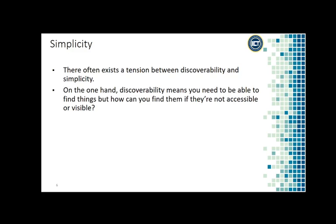The tension is about how things can be made sophisticated so that it is not a complex drawing of stuff in front of you where you have to think a lot for selecting a particular option. On the one hand, discoverability means you need to be able to find things, but how can you find them if they are not accessible or visible?